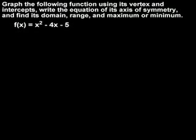In this example, we're given the function f of x equals x squared minus 4x minus 5, and we're asked to graph the function using its vertex and intercepts, write the equation of its axis of symmetry, and find its domain, range, and maximum or minimum value. Remember from the functions chapter that f of x means the same thing as y, so we can rewrite our function as y equals x squared minus 4x minus 5.